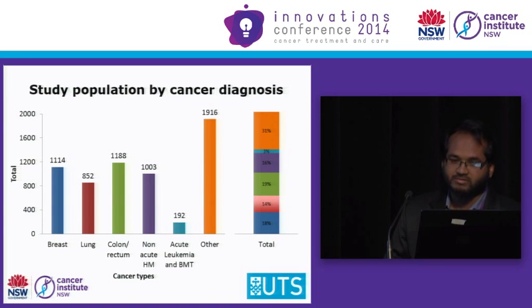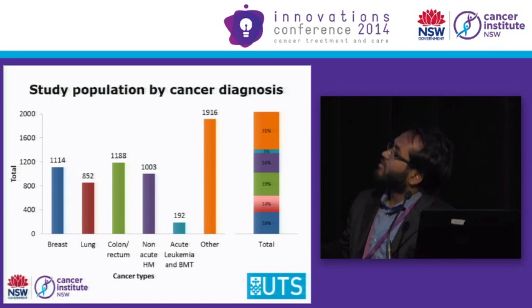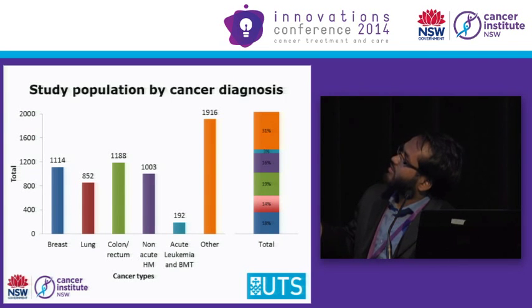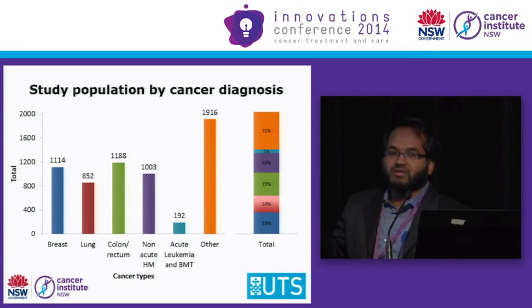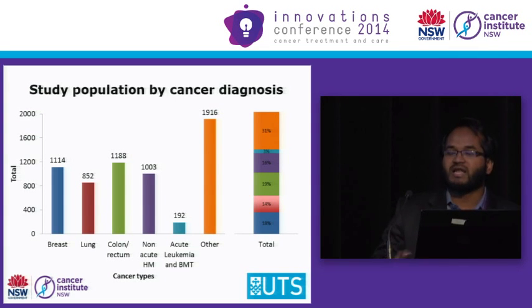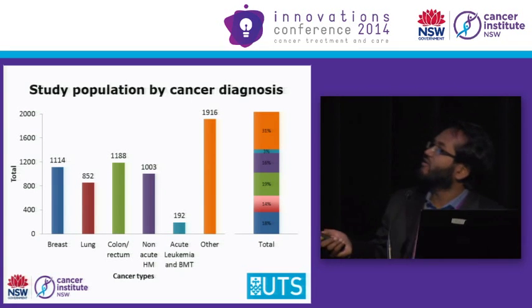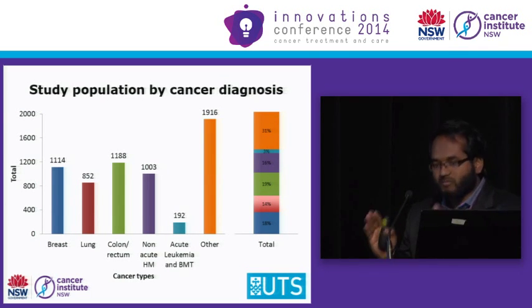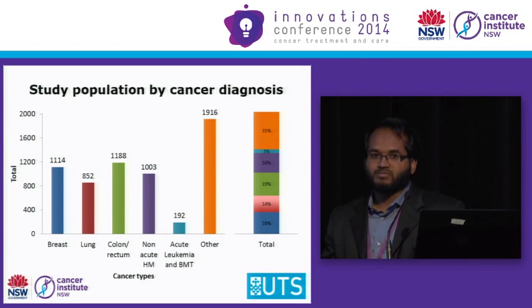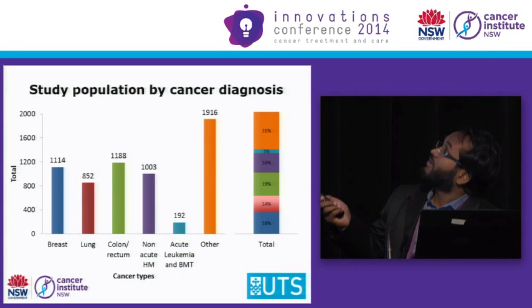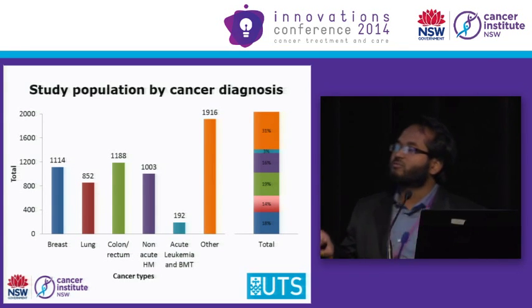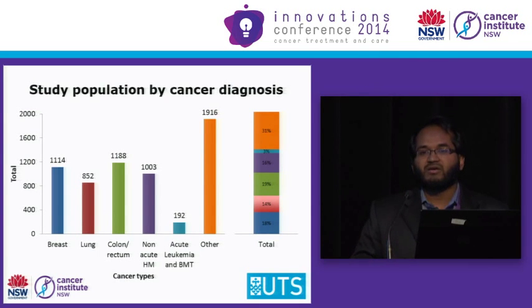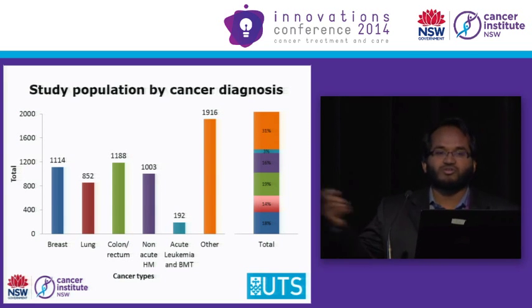This graph shows the composition of our study population. As you can see, breast cancer, colon, rectal, and hematological malignancy patients consist of similar proportions. There are slightly fewer lung cancer patients. The larger 'other' group consists of ovarian cancer, prostate cancer, pancreatic cancer, stomach cancer, and all sorts of other cancers.